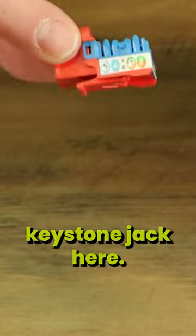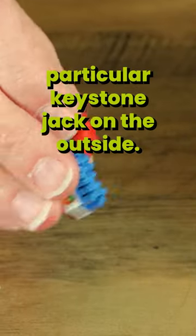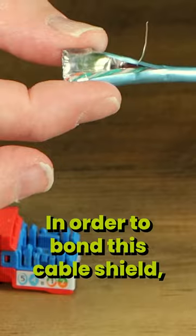In this case, we have an unshielded keystone jack here. There's no metal on this particular keystone jack on the outside in order to bond this cable shield.